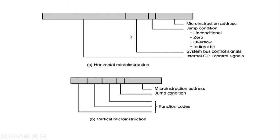The general format of a horizontal micro instruction includes: the instruction address for jump conditions (unconditional jump, jump on zero result, jump on overflow, etc.), system bus control signals, and internal CPU control signals — making it a longer format. The vertical micro instruction format also contains the micro instruction address and jump conditions, but uses function codes to specify operations, CPU control signals, and bus control signals. It is shorter in length and in encoded format.